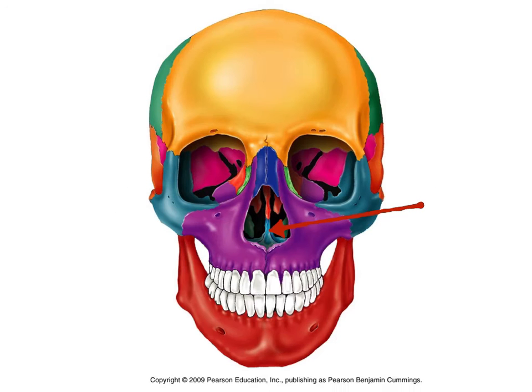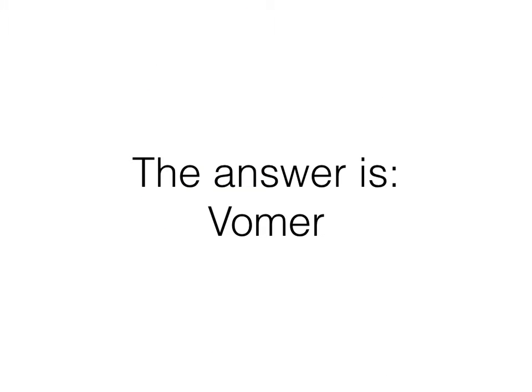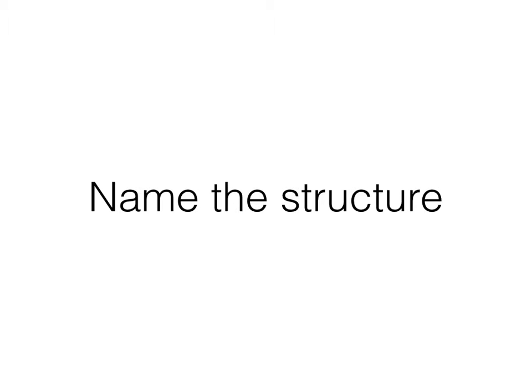Let's go ahead and look at this next one. This is the vomer. It's also called the inferior nasal concha, but it's part of the vomer bone.